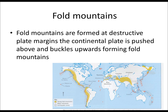Fold mountains are formed at destructive plate margins when the continental plate is pushed above and buckled upwards, forming fold mountains. On the map you can see the Andes, the Rockies, and then the Alps and the Himalayas, all shown in yellow on the map.